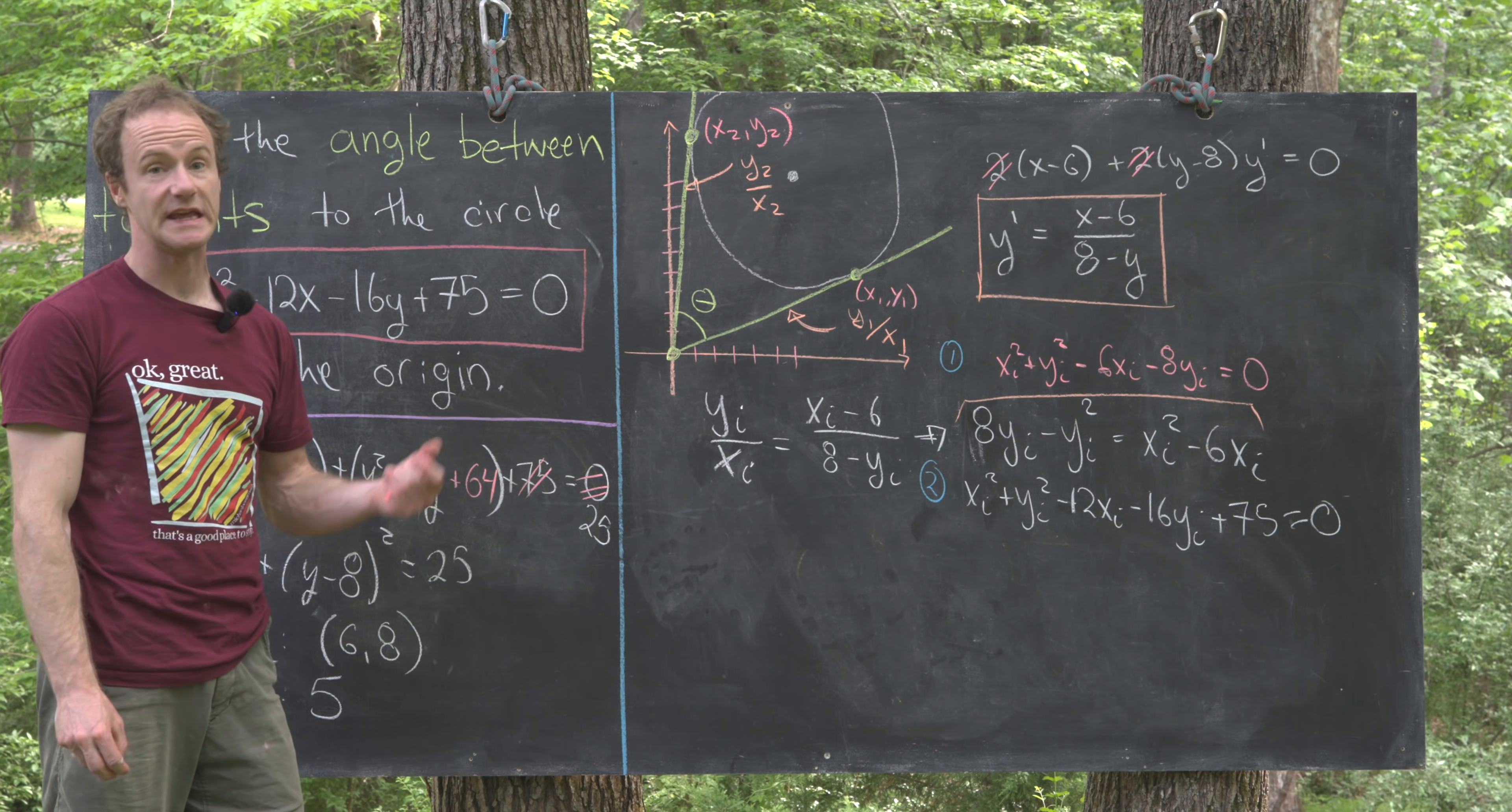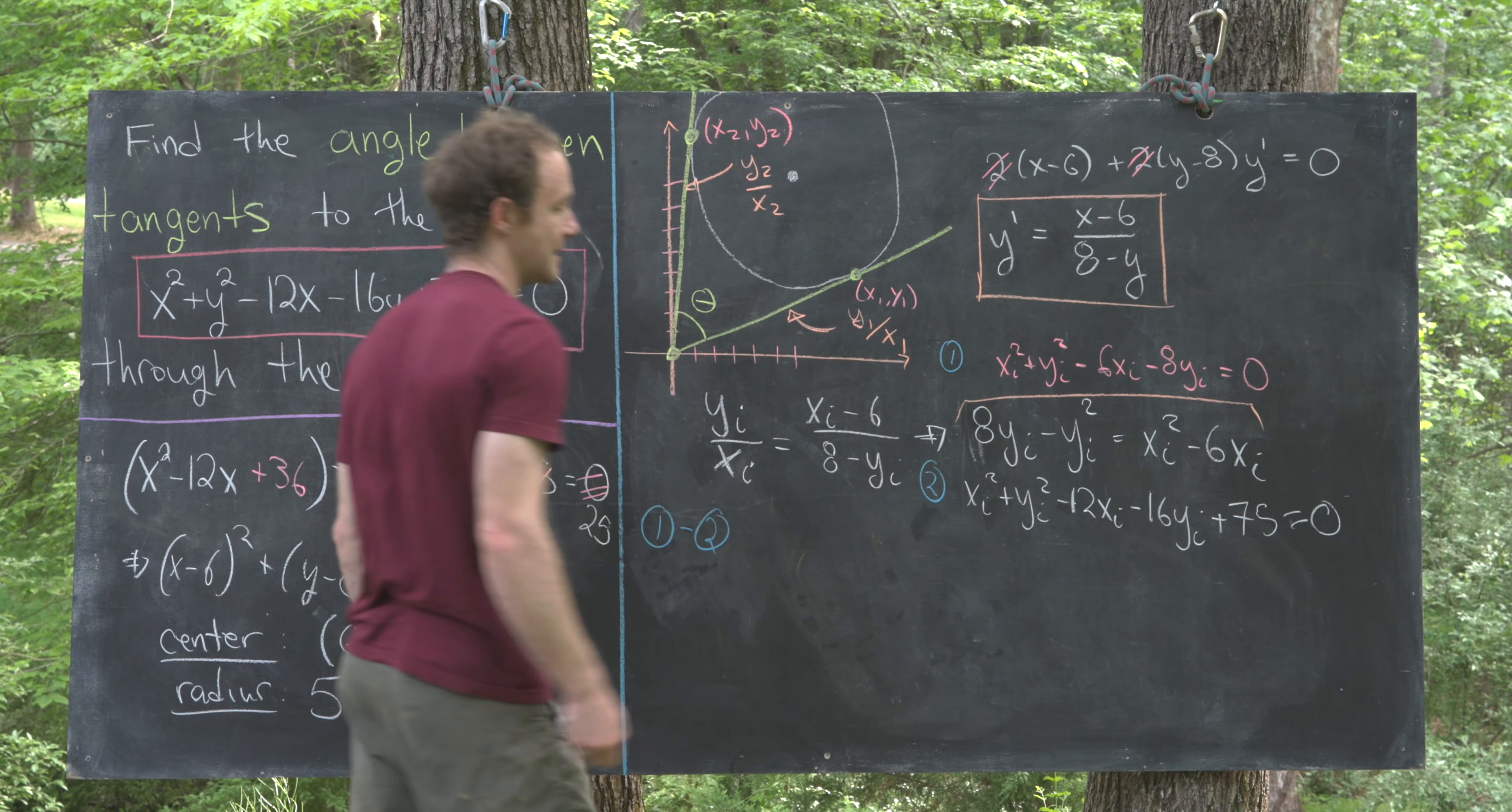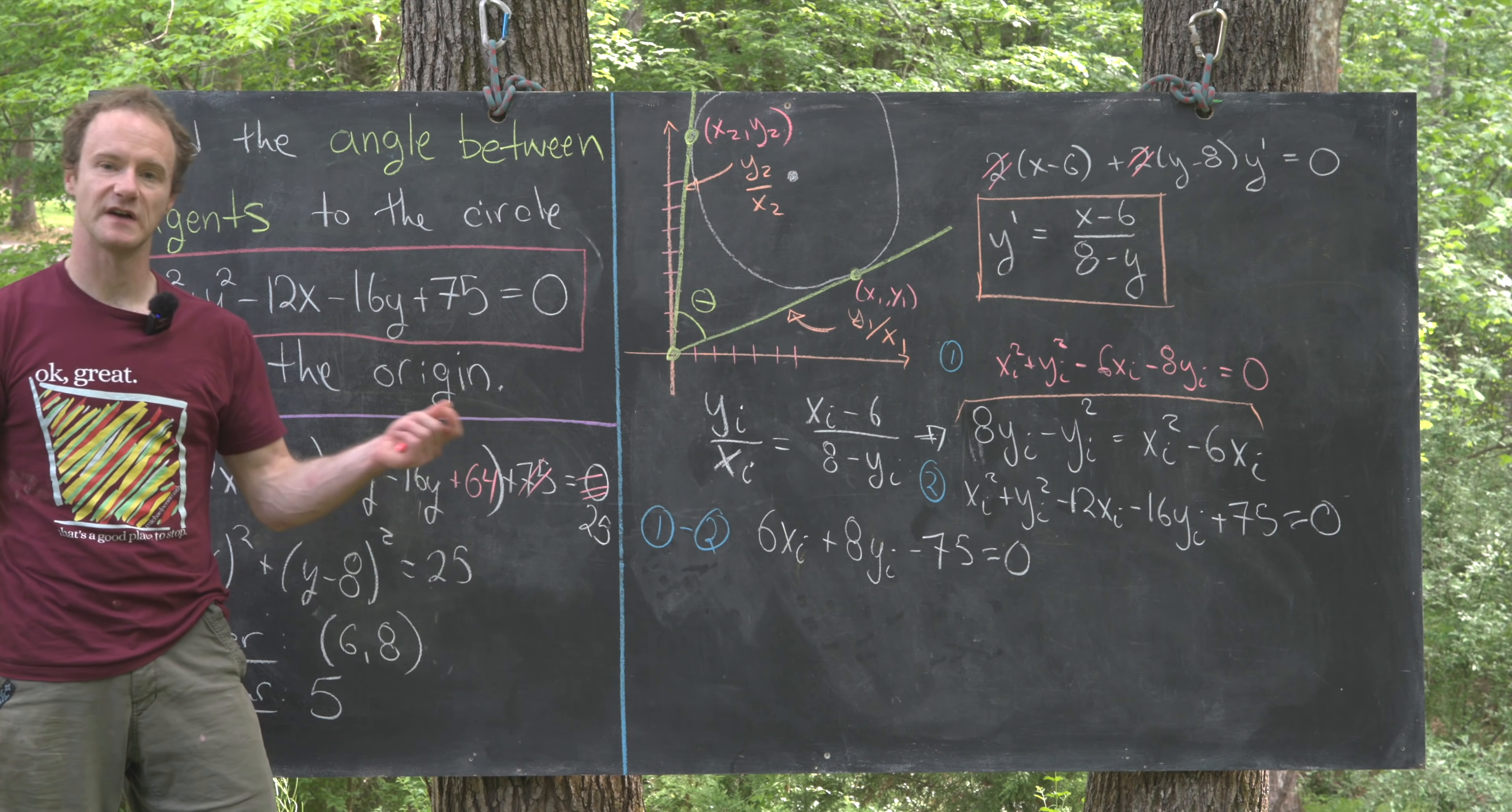If we subtract equation 1 minus equation 2, we can get rid of all of the quadratic part because the xi squared and yi squared will cancel. Then we'll have minus 6xi minus negative 12xi, which gives us 6xi, and similarly for the yi parts, plus 8yi minus 75 equals 0.